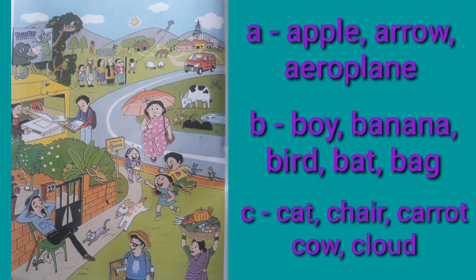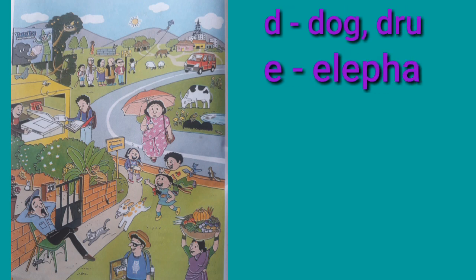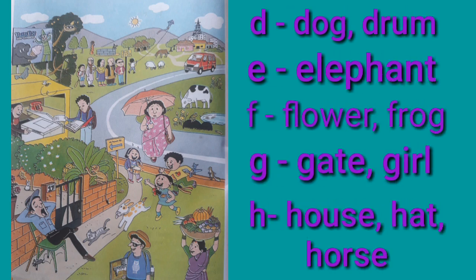From C: Cat, Chair, Carrot, Cow, Cloud. From D: Dog, Drum. From E: Elephant. From F: Flower, Frog.